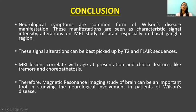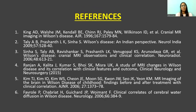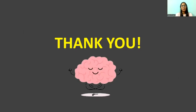To conclude, neurological symptoms are a common form of Wilson's disease manifestation. These manifestations are seen as characteristic signal intensity alterations on MRI study of brain, especially in the basal ganglia region. These signal alterations can be best detected by T2 and FLAIR sequences and correlate with clinical features like tremors and choreoathetosis. Therefore, MRI study of brain can be an important tool in studying neurological involvement in patients of Wilson's disease. Thank you very much.